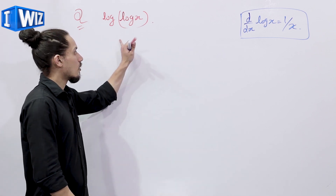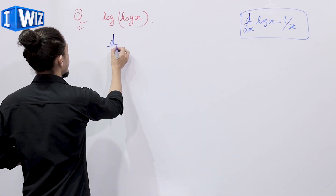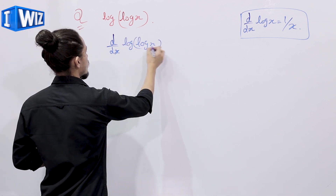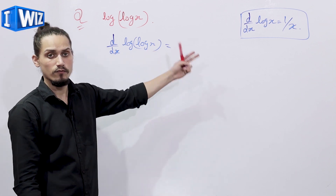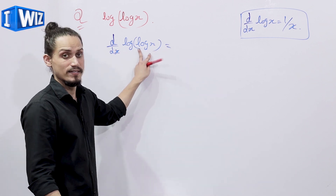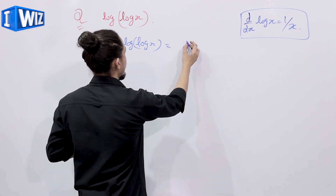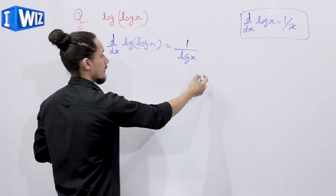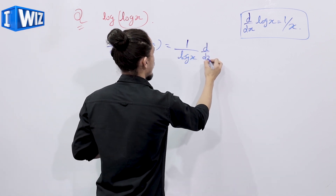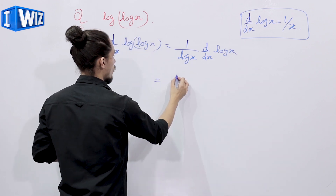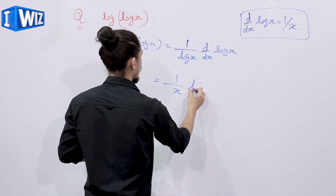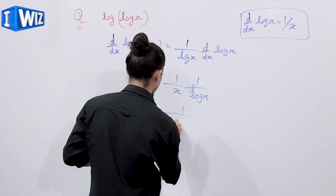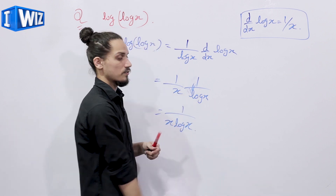The next function is log(log x). Its derivative: d/dx of log(log x) equals 1 upon log x, and then by chain rule, d/dx of log x = 1/x. So we get 1 upon log x times 1 upon x, which equals 1 upon x·log x, and hence the result.